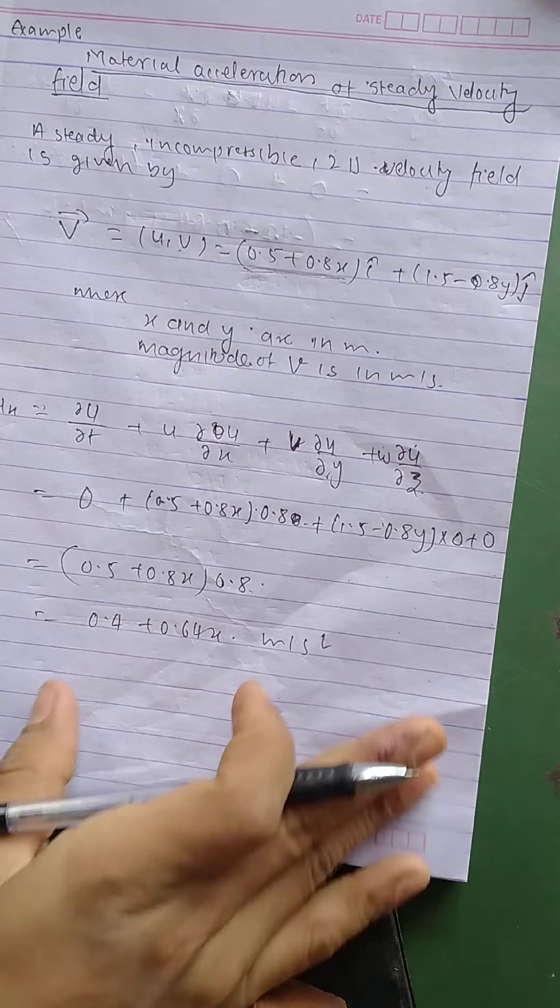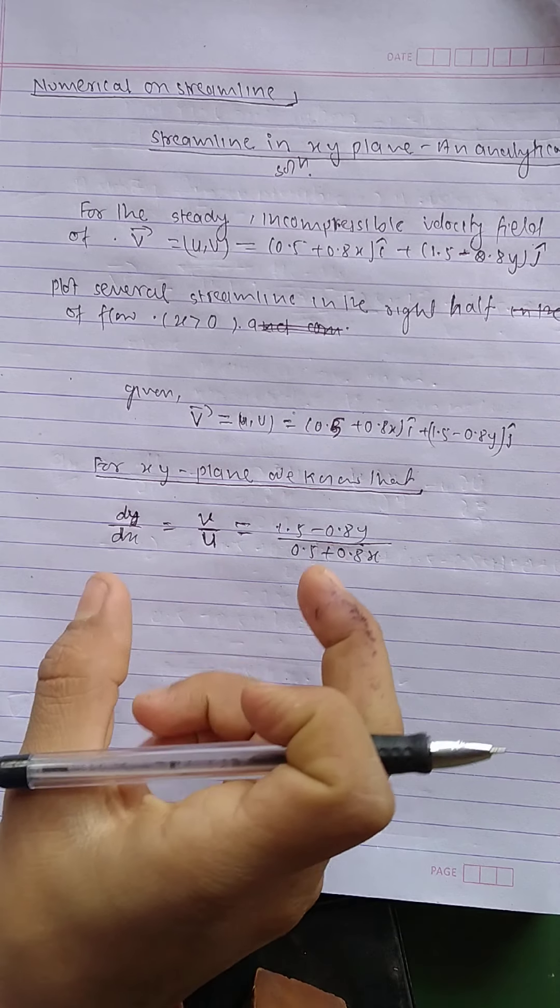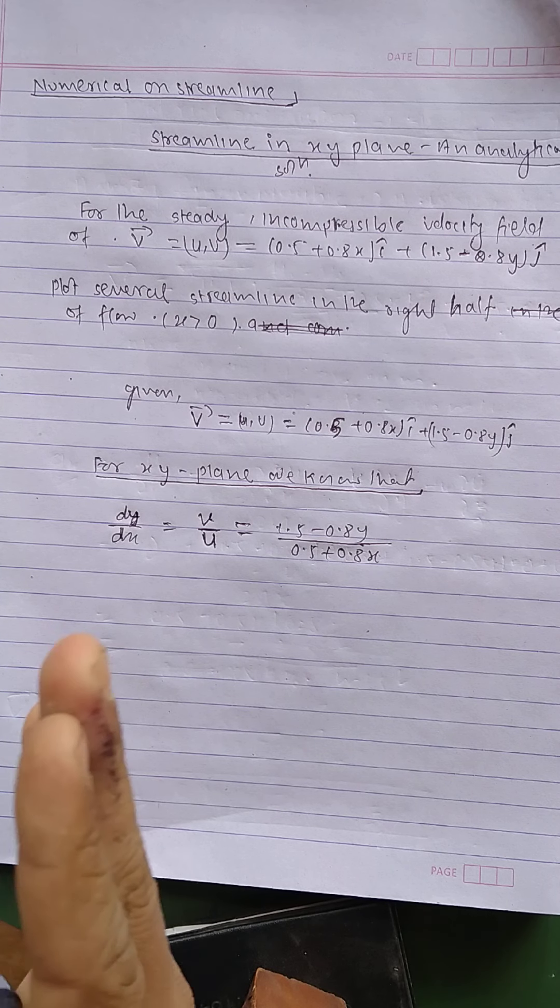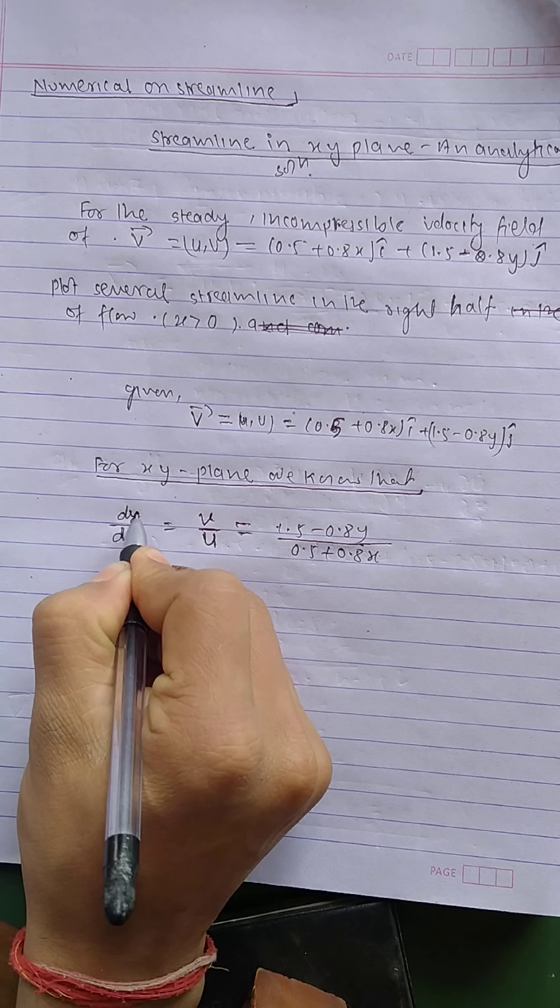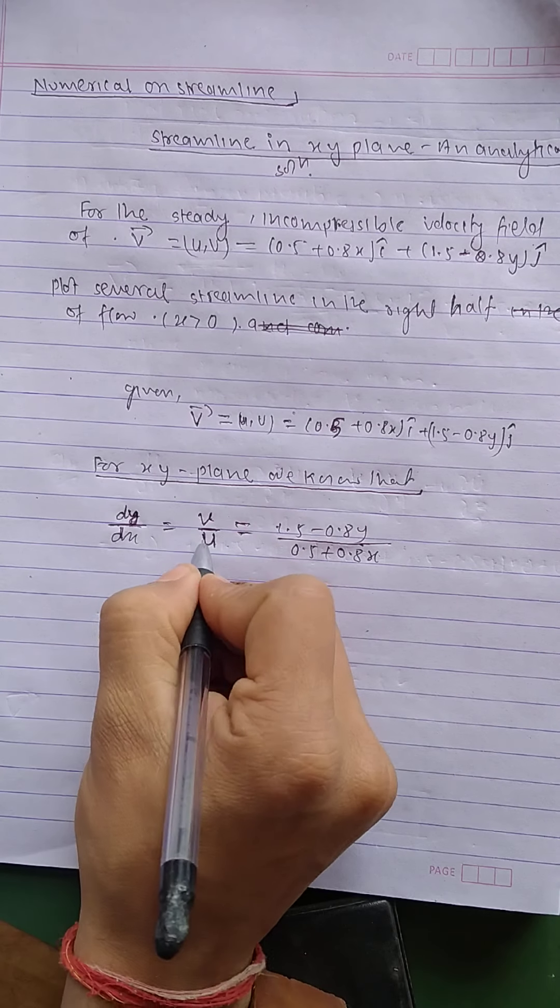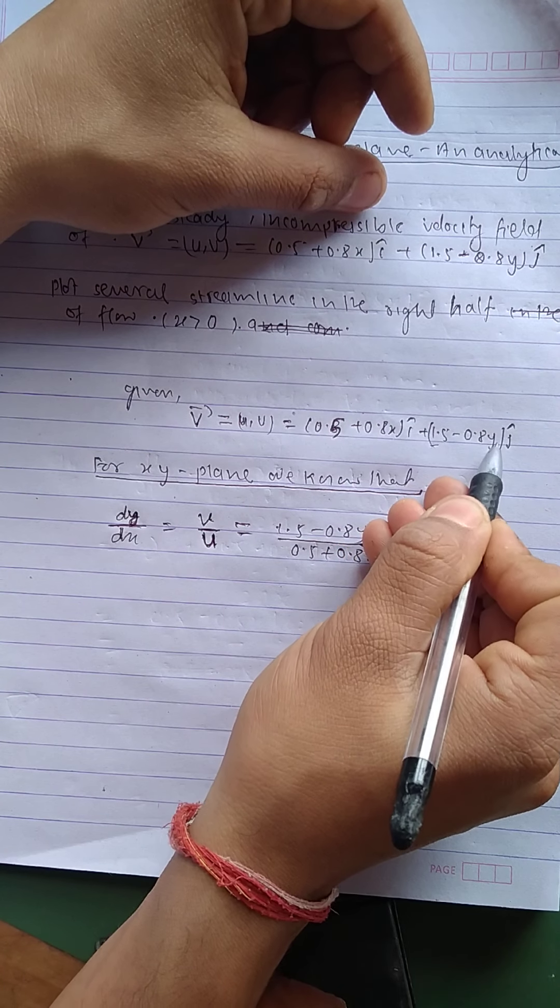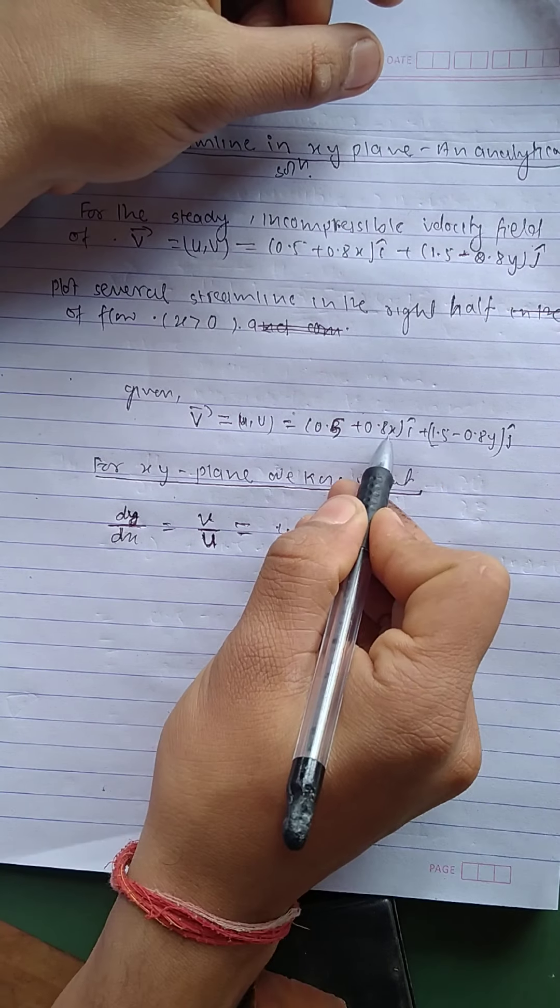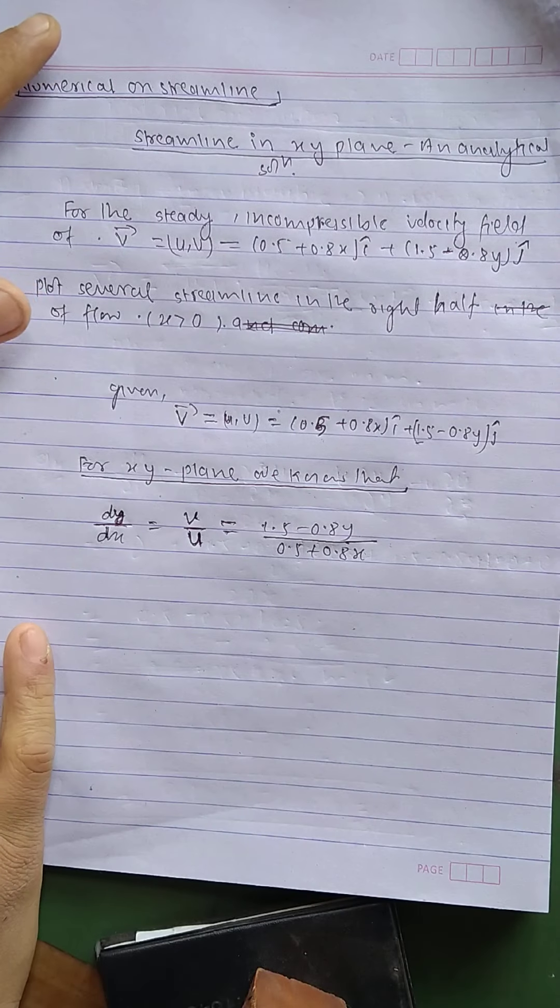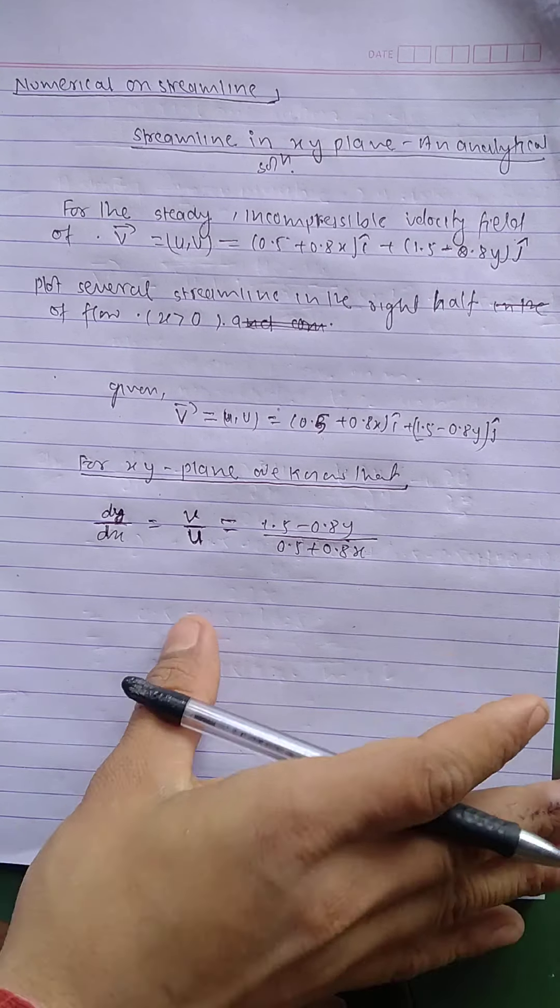Streamline is a curve that is everywhere tangent to the instantaneous local velocity vector. So in this case, for the streamline, for the two-dimensional x-y plane, what is the tangent curve will be given by the derivative dy by dx. This is a tangent or slope. We can say that v by u, and what is v? v is 1.5 minus 0.8y, and what is u? 0.5 plus 0.8x. So now this is our dy by dx for the x-y plane.